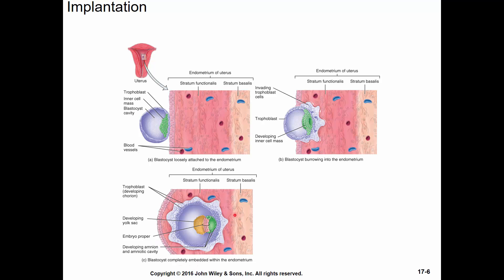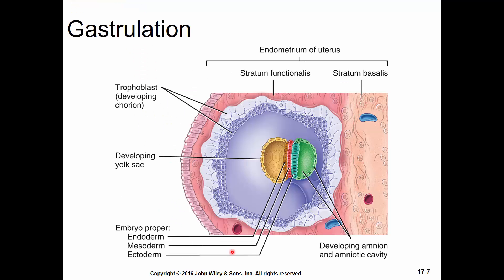Here you see this embryo developing in the wall of the mother's endometrium. The ectoderm will become what's on the outside of the body; the mesoderm forms a lot of the muscles and internal organs; the endoderm lines the lungs, GI tract, and urinary tract. The cells close to the mother's endometrium will form the placenta. The amnion will eventually grow into the chorion, and together they make up the fetal membranes.